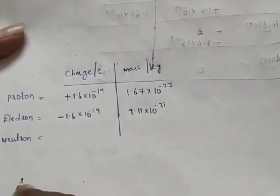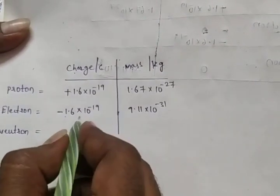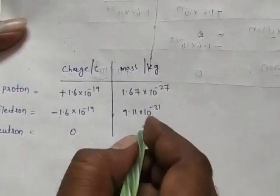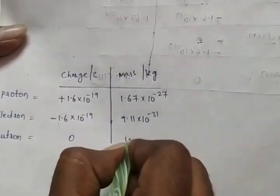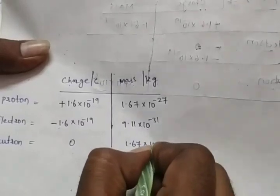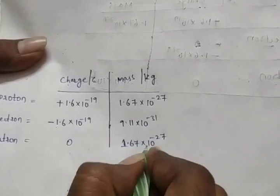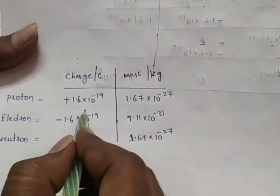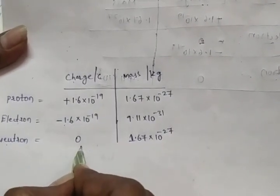Third, the neutron. Neutron has no charge — there is zero charge. The mass of a neutron is 1.67 into 10 to the power of minus 27 kilograms.